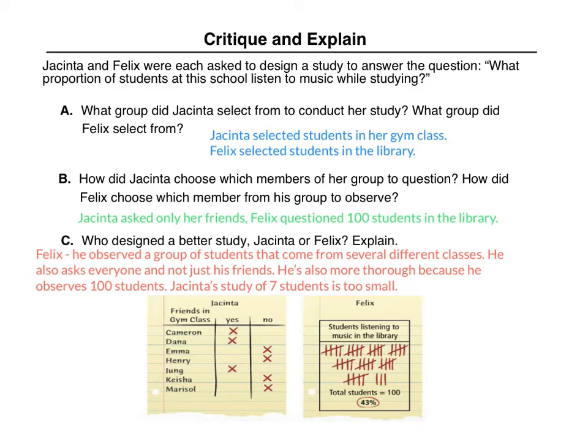Felix's study is much better for several reasons. First, he observed a group of students that come from several different classes. Jaquinta's group was only students in her gym class, so those students are probably all in the same grade. People in the library come from a variety of different grades and subject areas. Felix also asks everyone and not just his friends, and he's much more thorough because he observes 100 total students, whereas Jaquinta's study of only seven students is too small. Bigger samples usually get us much better results than small samples.